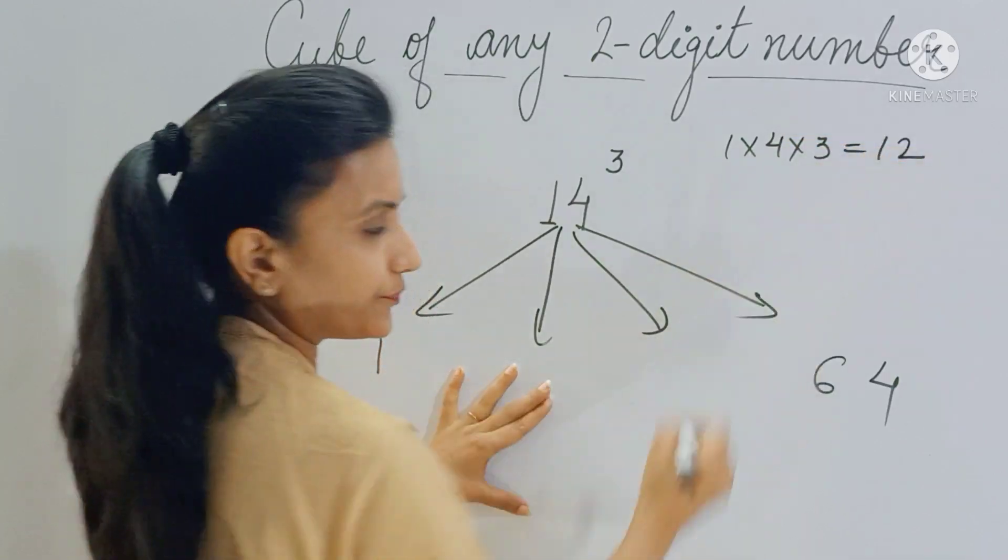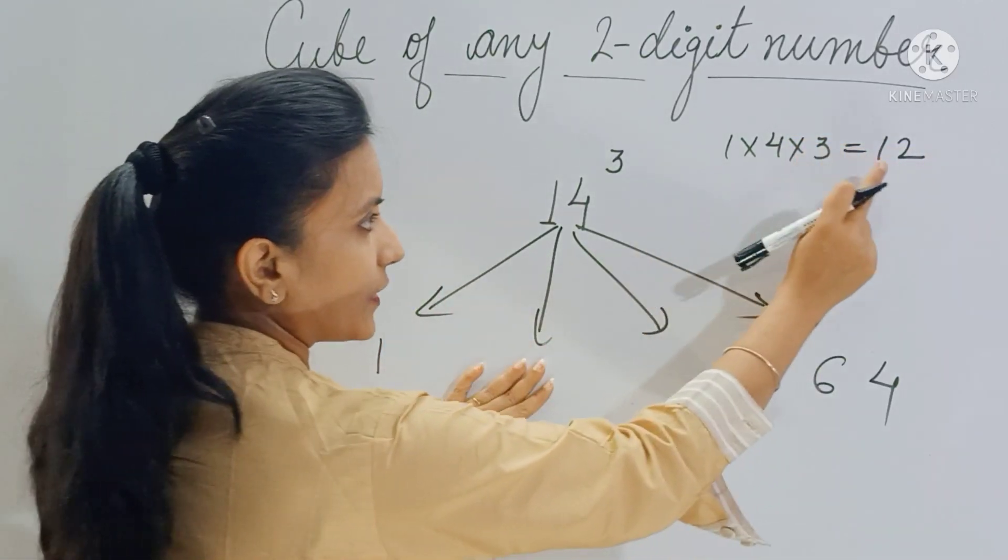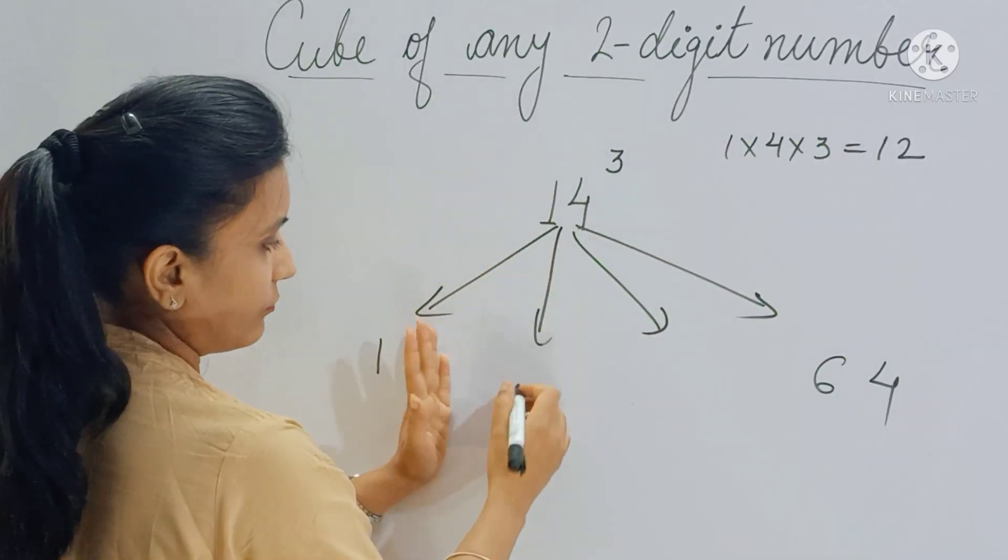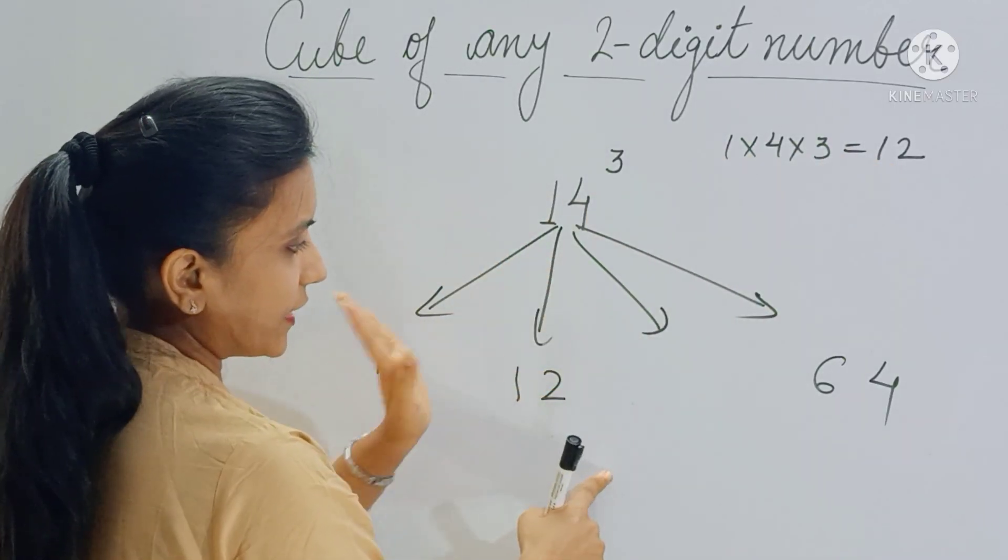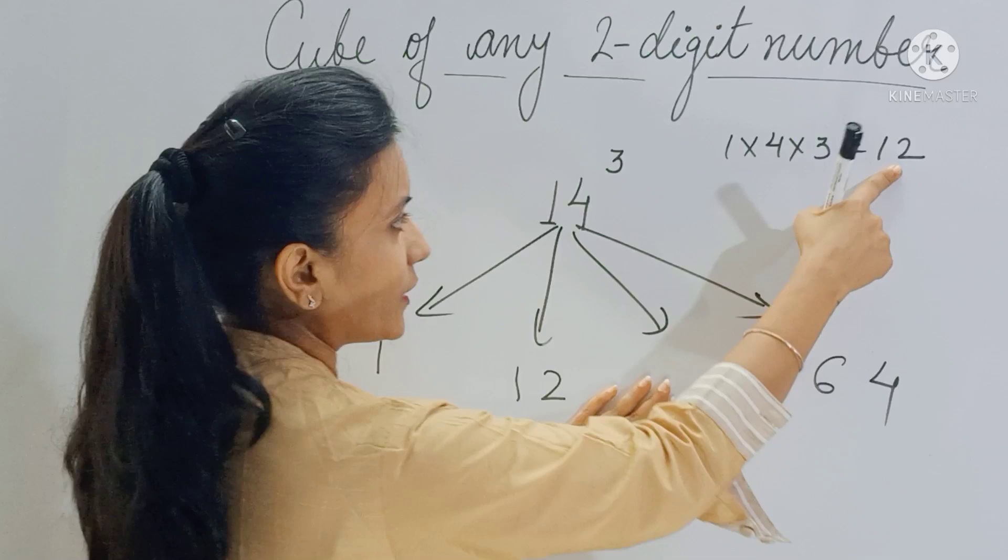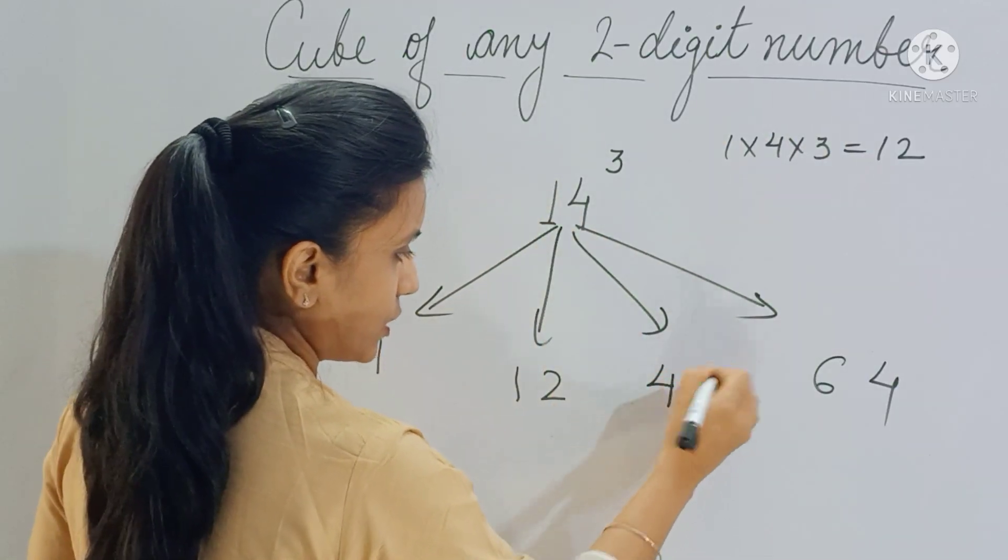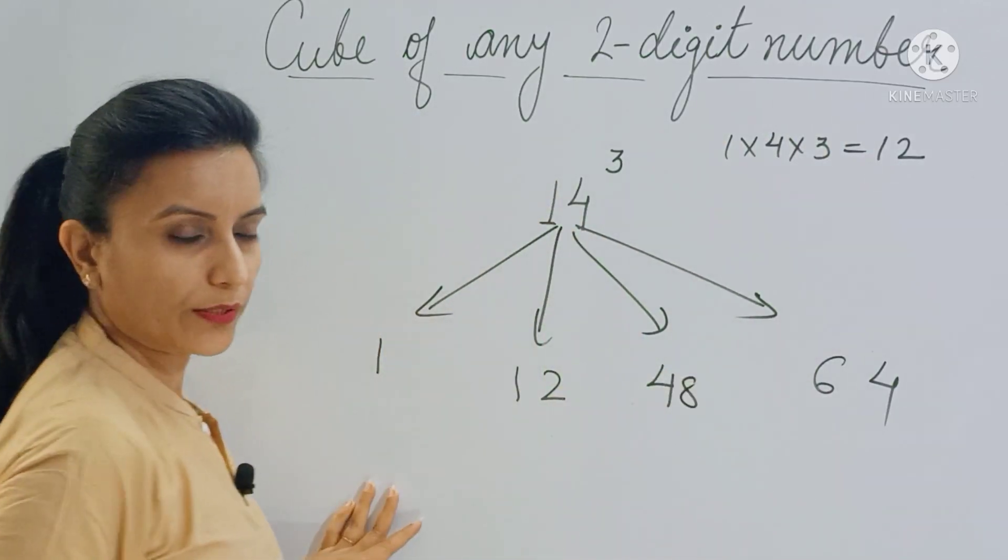Okay, to get this part you have to multiply 12 with 1, which is 12. And to get the next part you have to multiply 12 with 4, which is 48. So these are your four parts.